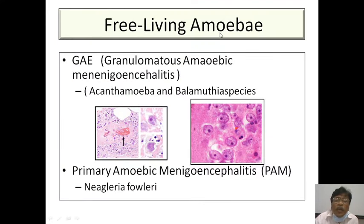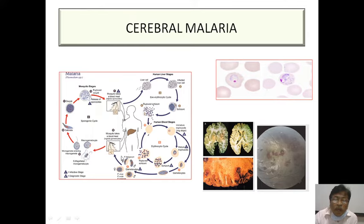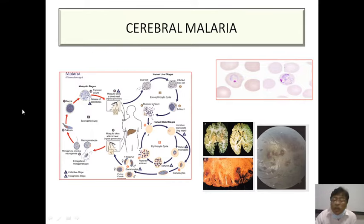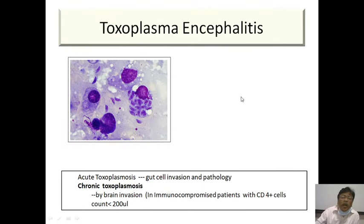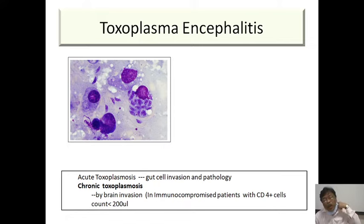Free-living amoeba infections are essentially post-mortem diagnoses — ante-mortem diagnosis is difficult and death occurs rapidly. In cerebral malaria, Plasmodium falciparum is the primary cause, though there are reports of P. vivax also producing cerebral malaria. Brain changes and retinal hemorrhages can be seen. Toxoplasma encephalitis is a hallmark in individuals with CD4 count less than 200 — anyone with encephalitis and CD4 below 200 should be investigated for Toxoplasma encephalitis.